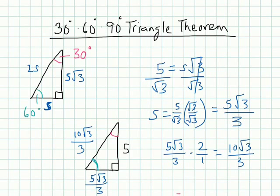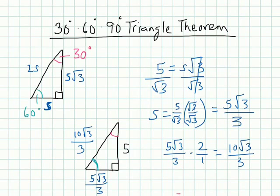The rest of the problems work the same way — given a side, use the relationships between the two legs and the hypotenuse to find the missing sides. So again, 5 equaled the short side times rad 3, we divided both sides by rad 3 to get 5 over rad 3, rationalized the denominator to get 5 rad 3 over 3 as our short side, then multiplied by 2 to get 10 rad 3 over 3 as the hypotenuse. Hopefully this helps — I'll talk to you in the next section!